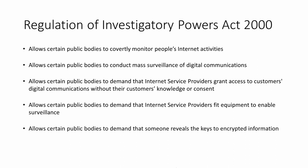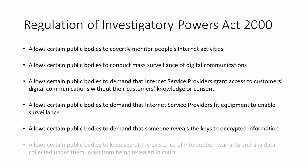RIPA allows certain public bodies to demand that someone reveals the passwords or keys to encrypted information. This particular power is limited to the police, the intelligence services, GCHQ, MI5, MI6, the National Crime Agency, and the Taxman. Refusal to hand over encryption keys could result in a two-year prison sentence, or five years if national security is threatened. Finally, if a public body has been granted a warrant to perform covert surveillance, they can keep the existence of that warrant — and any data collected under it — a secret. They don't even have to reveal it in a court.